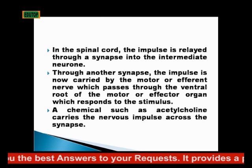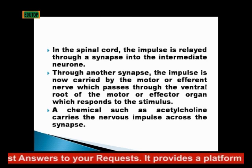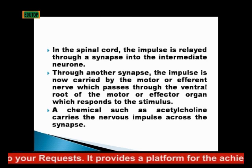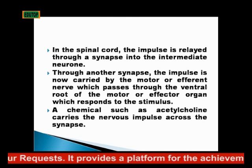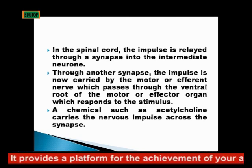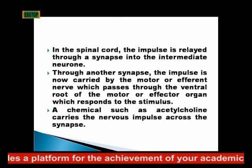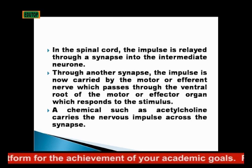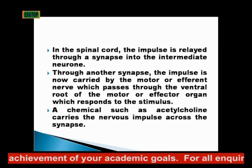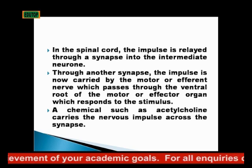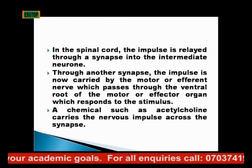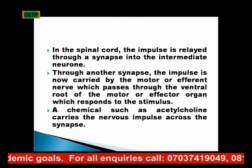Then, through another synapse, the impulse is carried by the motor or efferent nerve, which passes through the ventral root to the motor or effector organ that responds to the stimulus. A chemical such as acetylcholine carries the nerve impulse across the synapse.